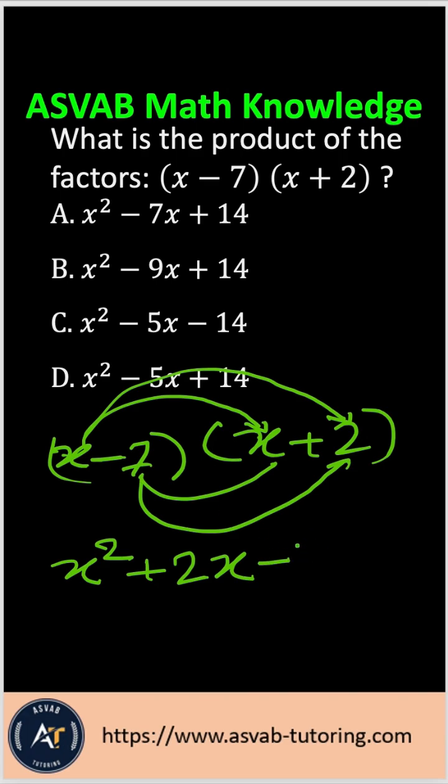times x gives you negative 7x. The negative times positive gives you negative, so 7 times 2 is negative 14. Now you have to combine the like terms.